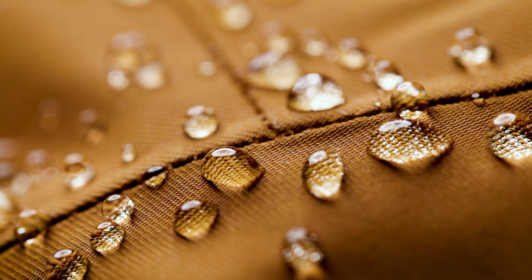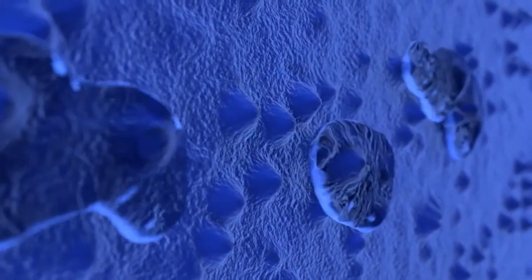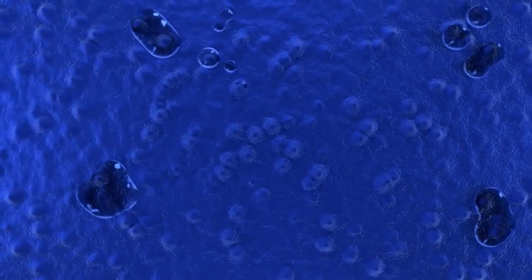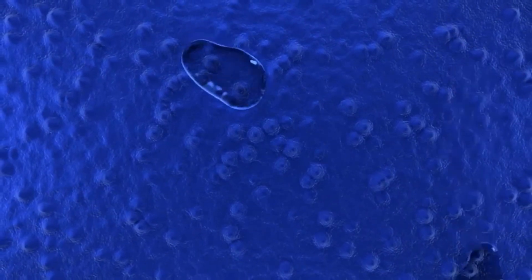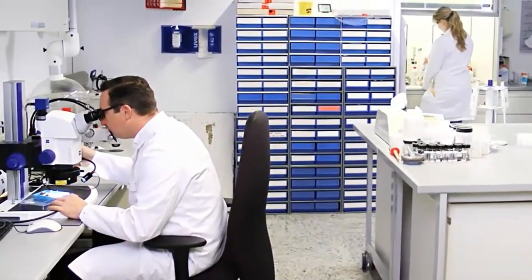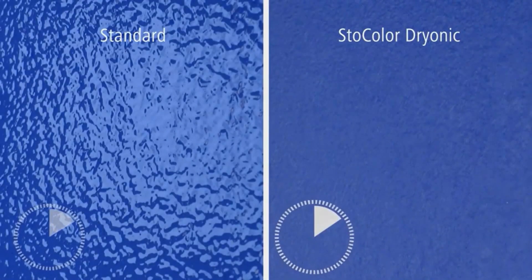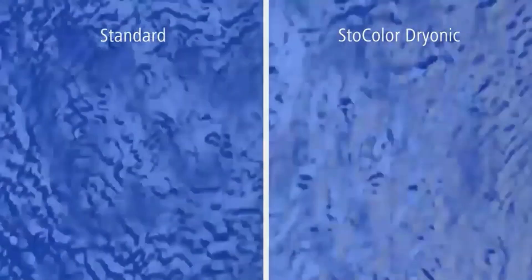Even paints like Stocholor Dryonic have been developed using the same methodology of meshing hydrophobic and hydrophilic materials. This paint allows facades to dry quickly after rain, dew or fog, leaving no time for algae or fungi to grow.